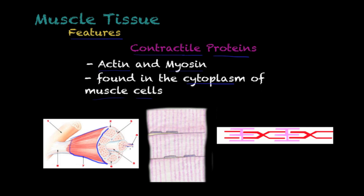Going into more detail at the microscopic view, we can see a muscle tissue cell where nuclei are visible. One of the very interesting characteristics of muscle cells is that under a microscope they show lines called striations. These striations are caused by the actin and myosin fibers or proteins.